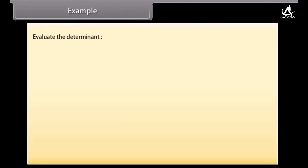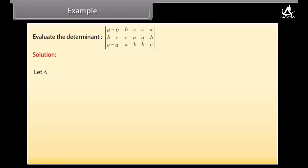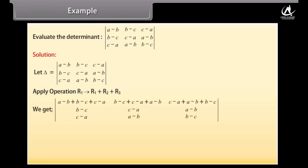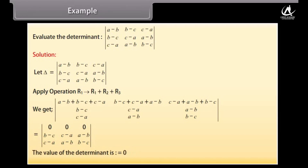Evaluate the determinant. Solution: Let delta = 2. Apply the operation R1 → R1 + R2 + R3. All the elements of one row become 0, so the value of the determinant is equal to 0.